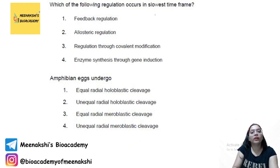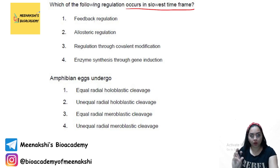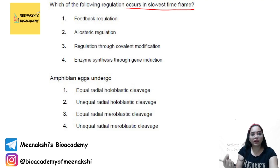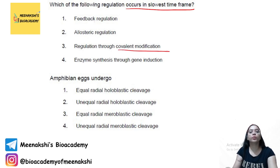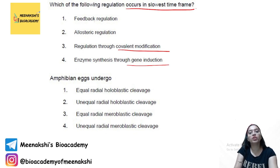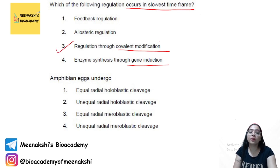Next question: which of the following regulations occurs in the slowest time frame? The options include feedback regulation by the product, allosteric enzyme regulation, covalent modification such as phosphorylation, and enzyme synthesis through gene induction. The regulation occurring in the slowest time frame will be enzyme synthesis through gene induction, because it depends on the rate of gene expression. So the answer is option 4 — wait, covalent modification. Actually the answer is the third option.